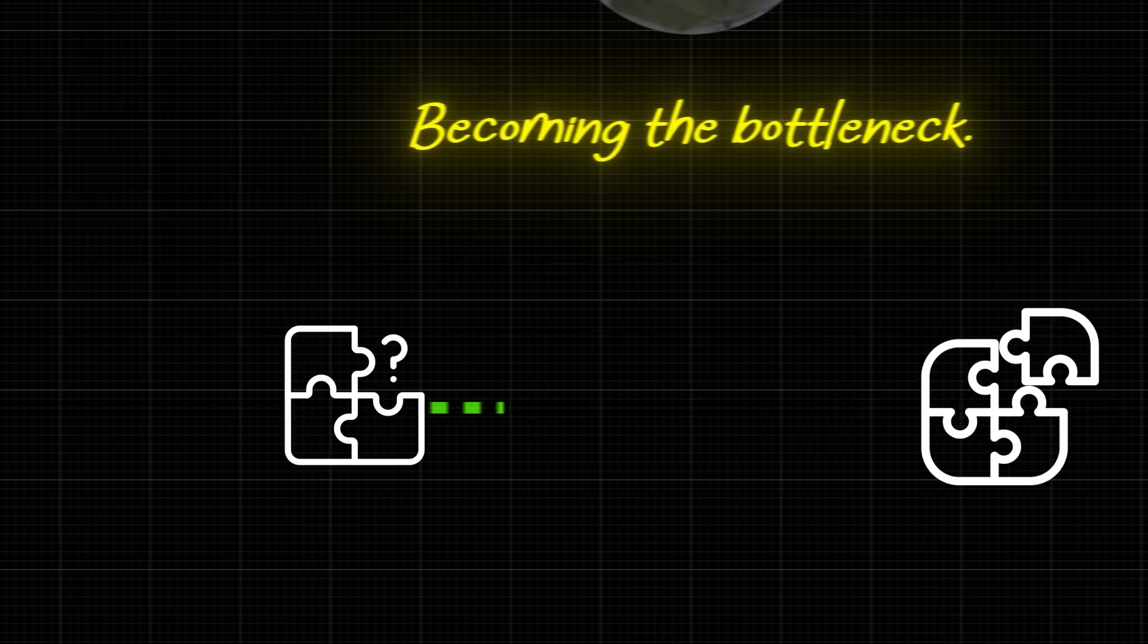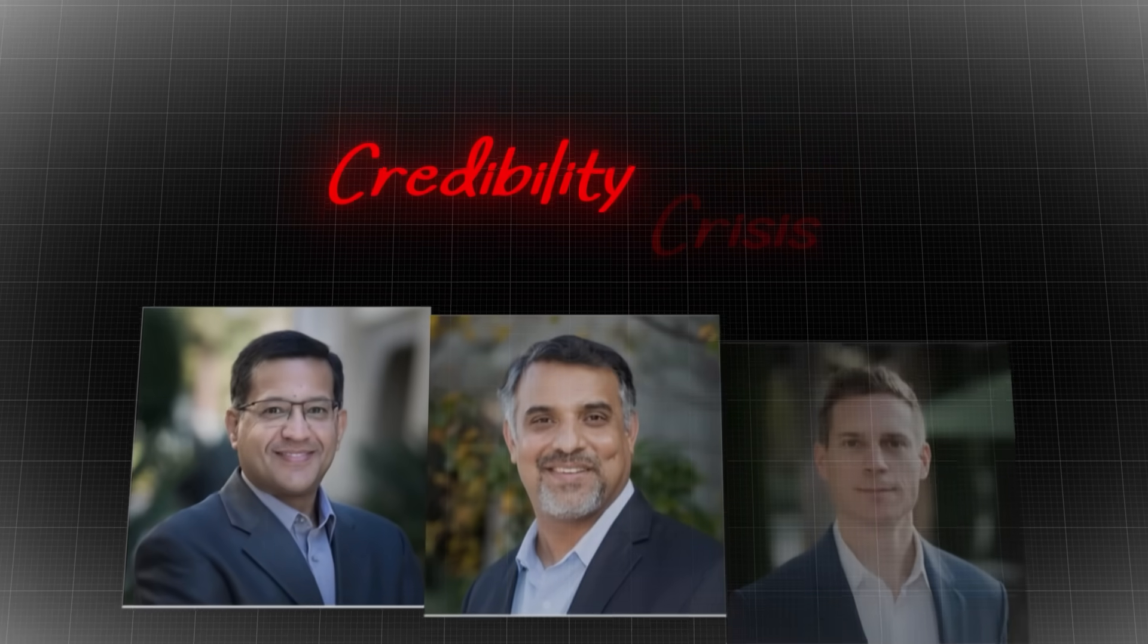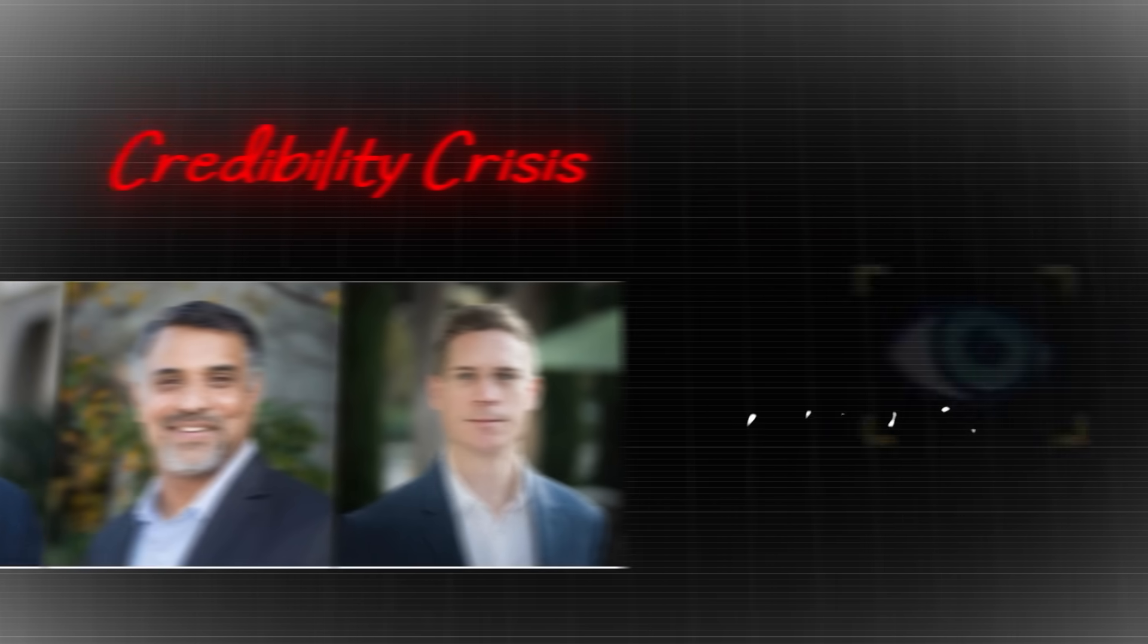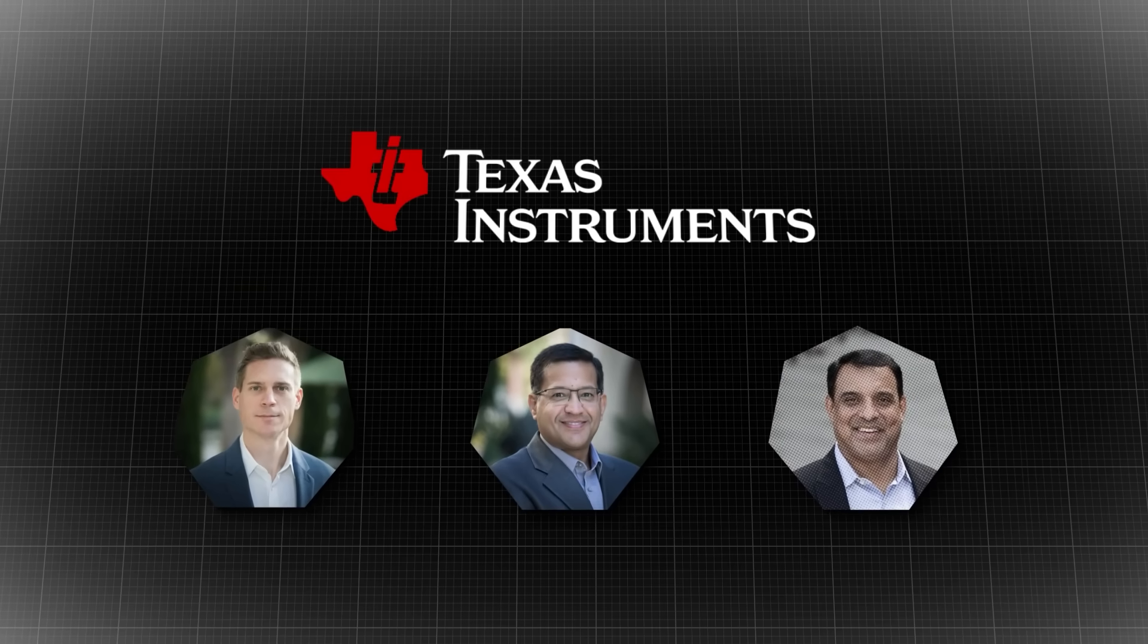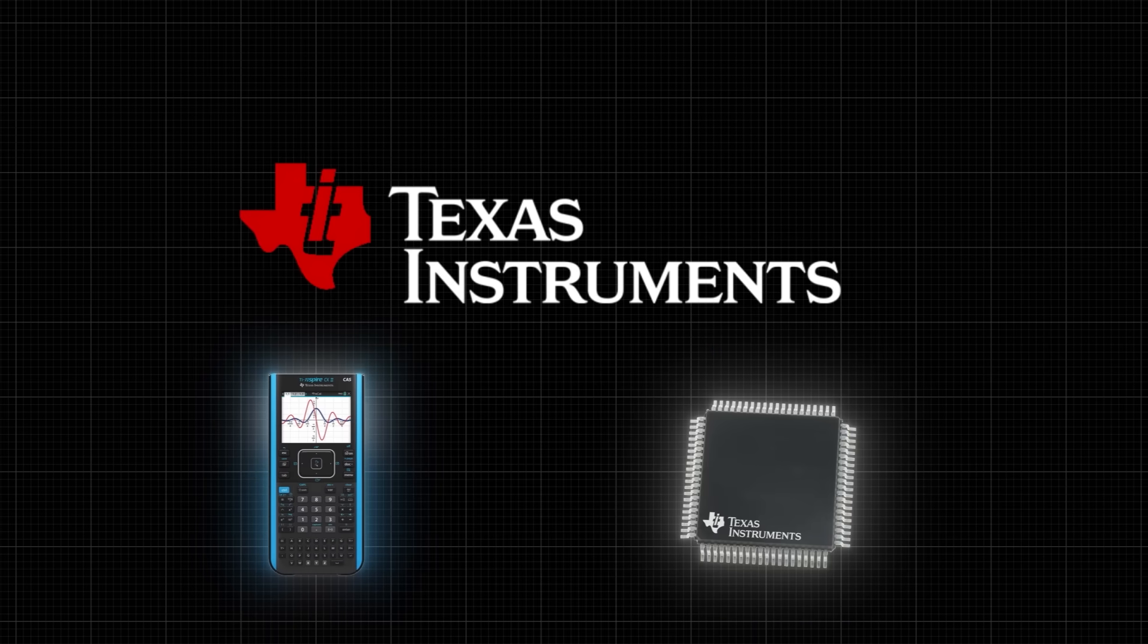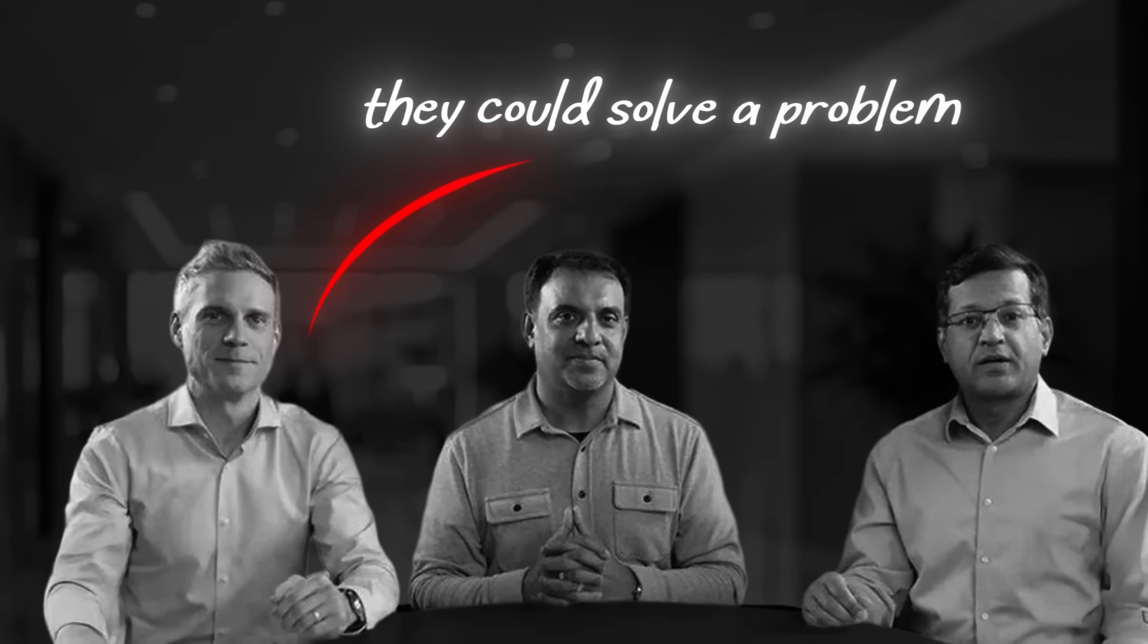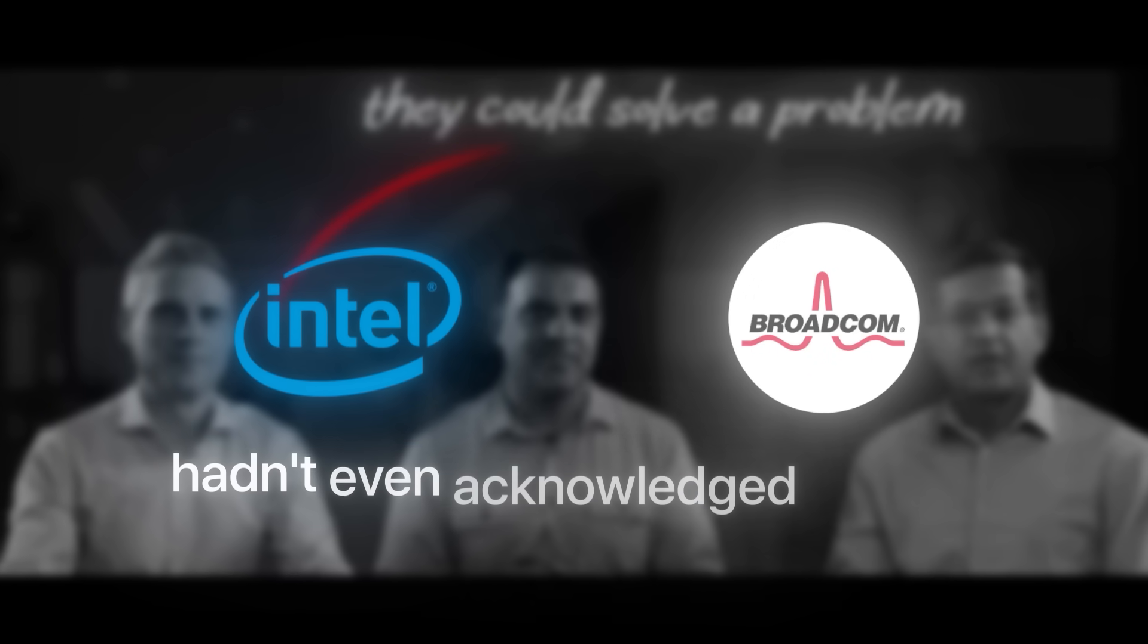But knowing the problem and solving it were two different beasts entirely. Because almost immediately, the trio faced a credibility crisis. Because in reality, they were just three random guys from Texas Instruments, an outdated company known for calculators and analog chips, claiming that they could solve a problem that industry giants like Intel and Broadcom hadn't even acknowledged existed.